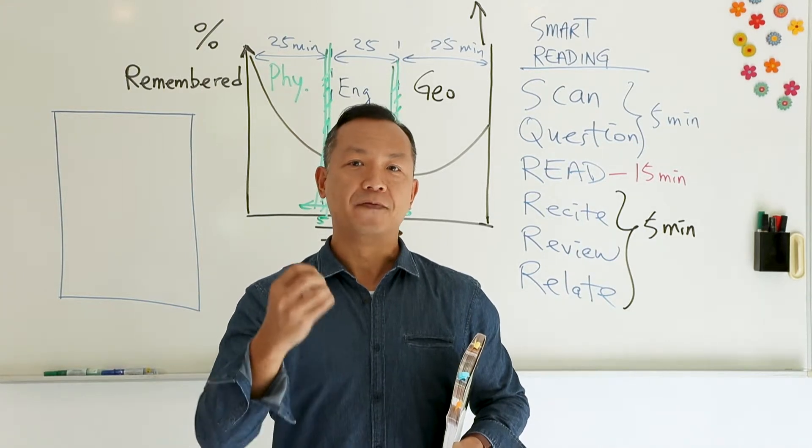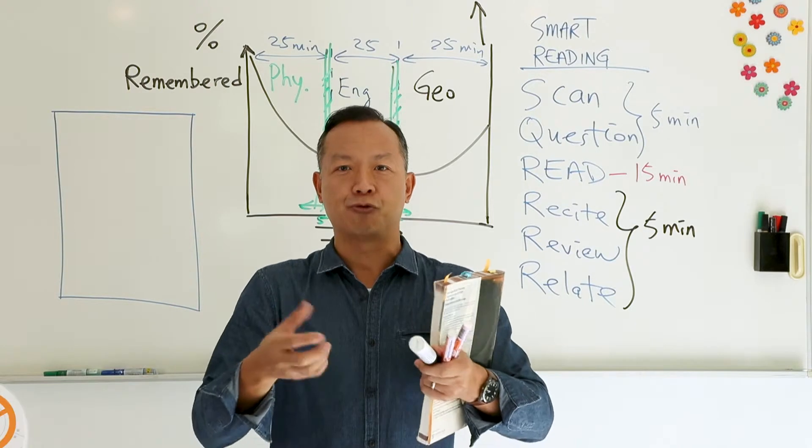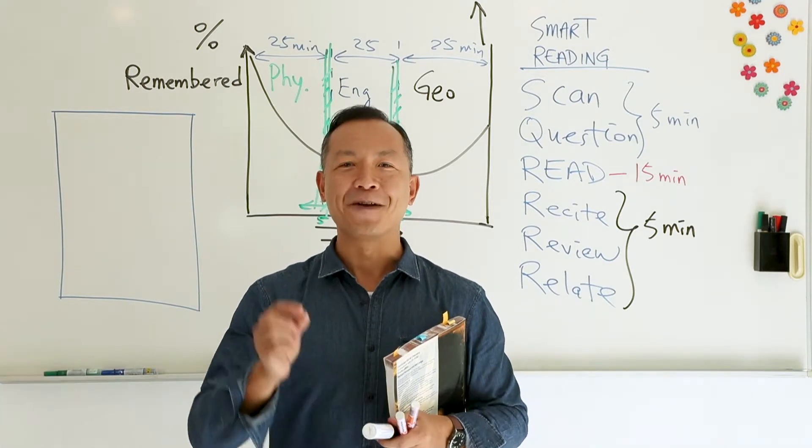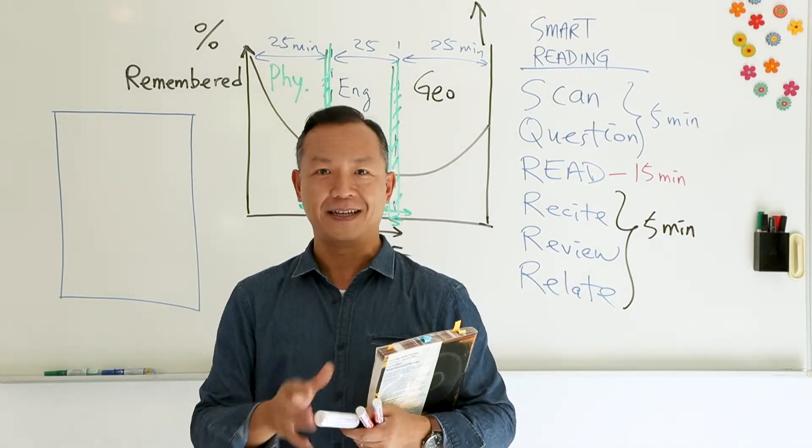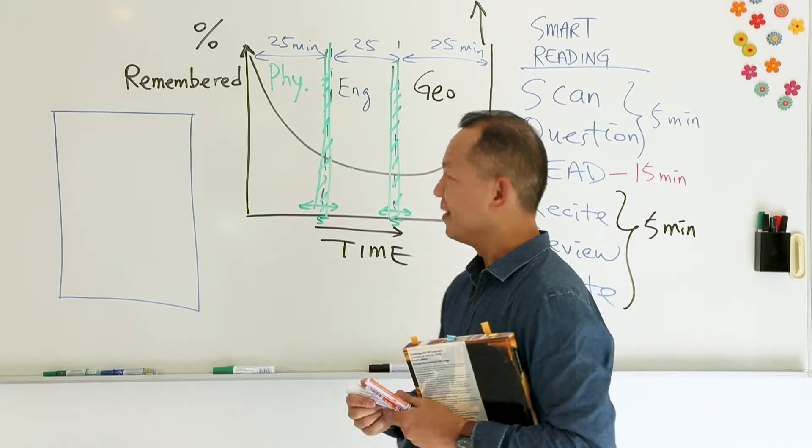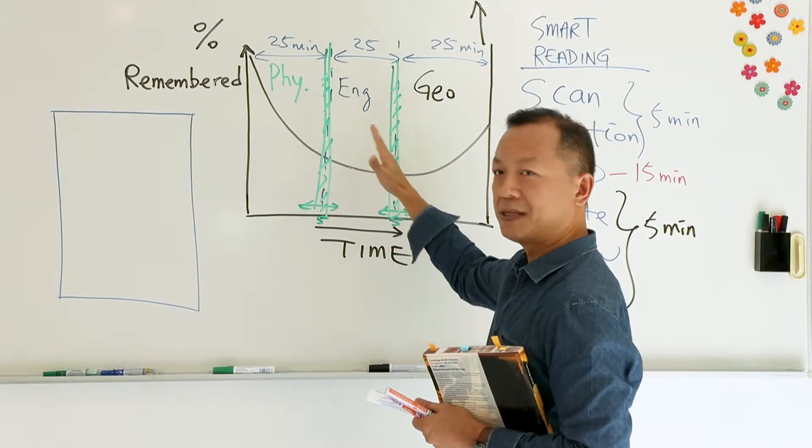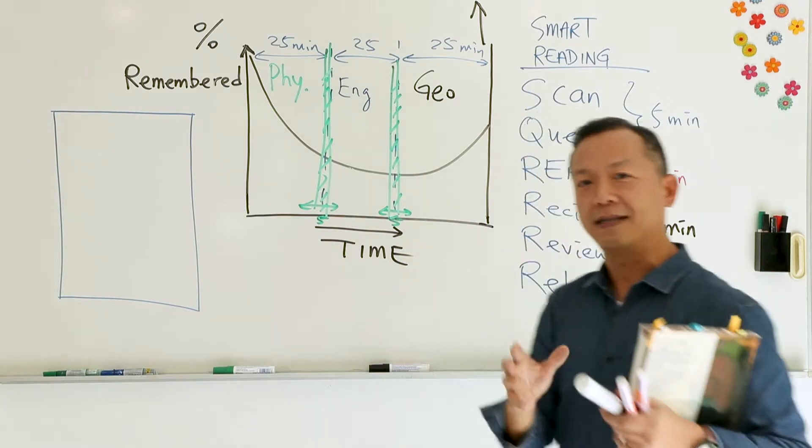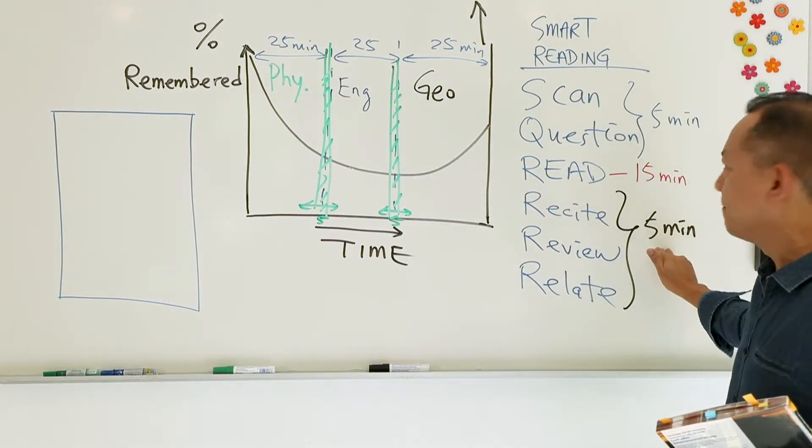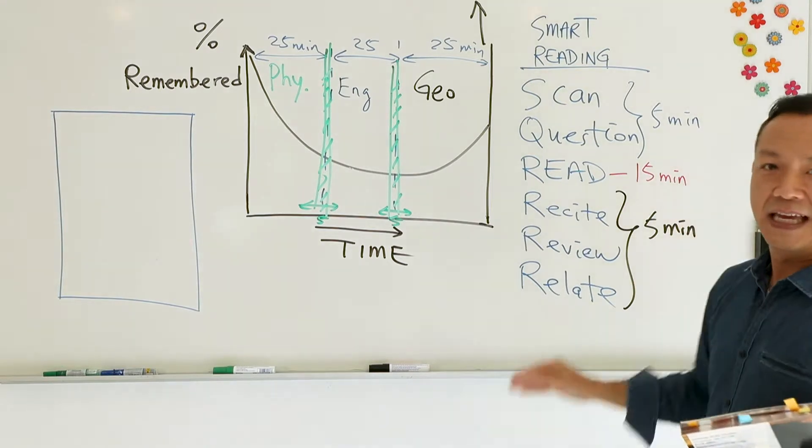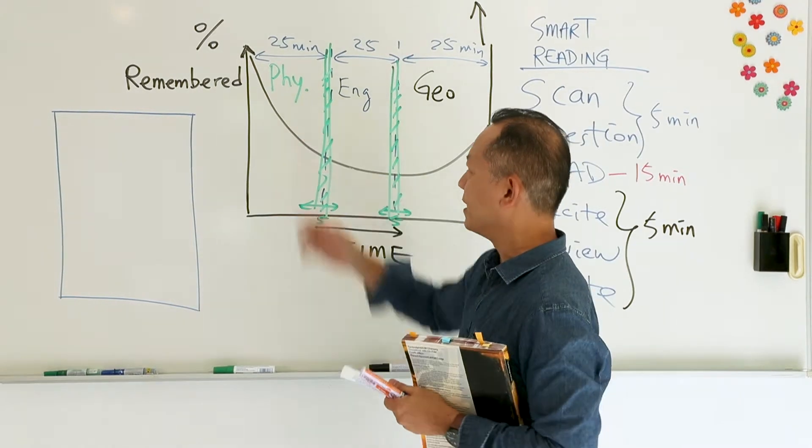It's called SQ4R. It's not a flight number. It's not the name of a droid in Star Wars. It's a very powerful technique that you can use. Now, let me put everything together. This is a powerful video. Earlier, I talked about how to study smart. If you notice one thing, for those of you who can do your mental arithmetic very quickly, add this up for me. It's 25 minutes. Does it ring a bell? Look at it - 25 minutes.